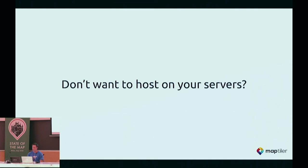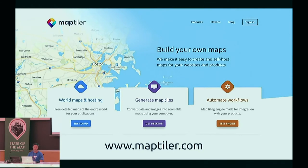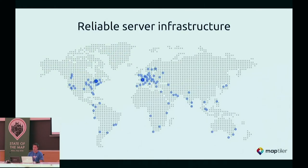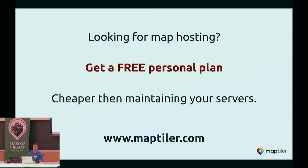If you don't want to manage that yourself, we're launching MapTiler Cloud — a hosting service powered by all the open source and open data we process. It runs on reliable infrastructure with very competitive pricing — I believe cheaper than most other providers. You can host your own data, change styles, and get raster and vector tiles from us. Business use starts at $20 per month. If you go there, you can get a free personal plan and access raster tiles for the entire world.